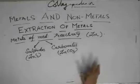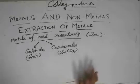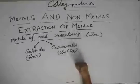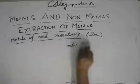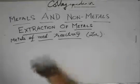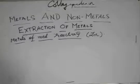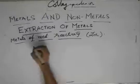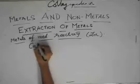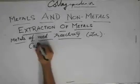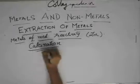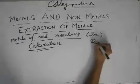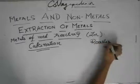In medium reactivity, these sulphides and carbonates are not so weak that just by heating you will get the metal. You need to employ different techniques. And there are two techniques which are employed for sulphides and carbonates respectively. One is called calcination and the other is called roasting.